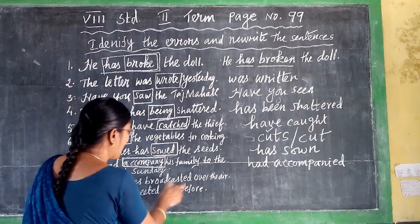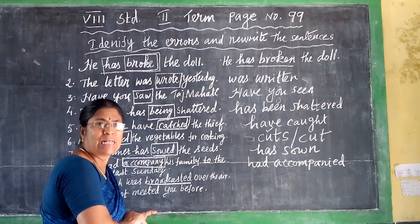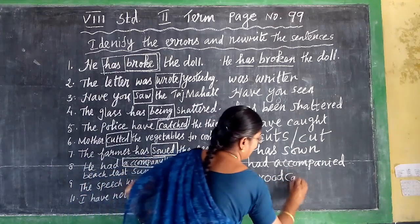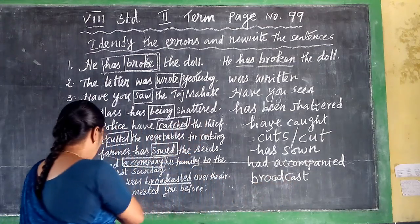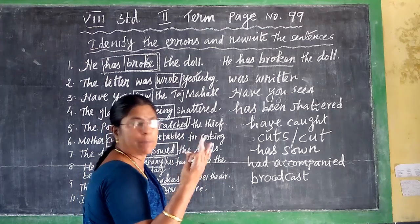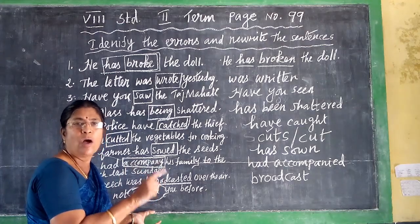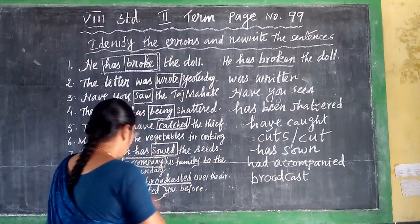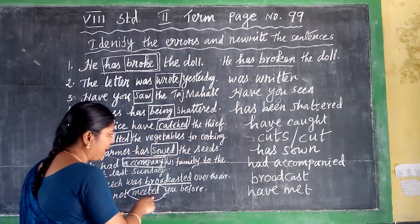Next: 'The speech was broadcasted over the earth.' The verb 'broadcasted' is used incorrectly — it is wrong, even though some dictionaries include it. Then: 'I have not metered you before.' Here, 'metered' is wrong. Meet, met, met — the past participle is 'met.' Have is followed by only the past participle. So the correct answer is: 'I have not met you before.'